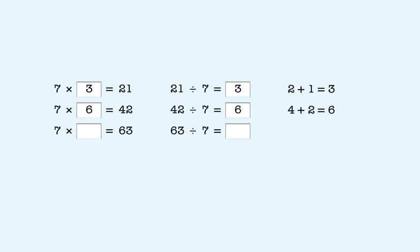The sum of the digits in 63 is 9, so the missing factor is 9. Which means 63 divided by 7 is 9.